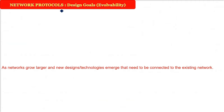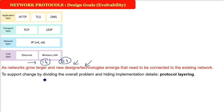Evolvability - when the network grows, different technologies and designs will emerge. When 1G came, nobody thought we would be dealing with 5G - we talked about KBPS then, now we talk about GBPS. To support all these changes, the best way is protocol layering: divide the network configuration into different layers, solving problems piece by piece without exposing implementation details.